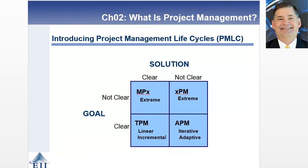We're back now and we've added some new things. As you recall, we had goal and solution with clear and not clear before. But now we've put names in those quadrants. TPM in quadrant 1, the bottom left-hand side, is traditional project management. When you've got a clear goal and solution, you're in quadrant 1, and linear and incremental are two different approaches to traditional project management. When we move to a clear goal and not clear solution, APM is agile project management, with iterative and adaptive as its two approaches.